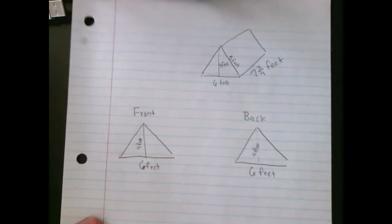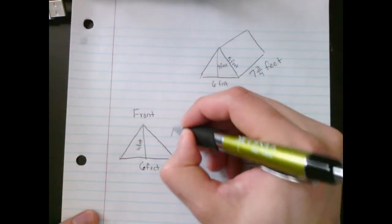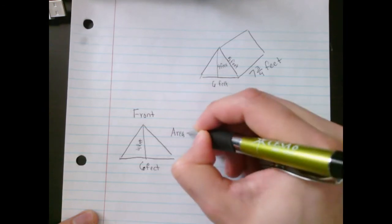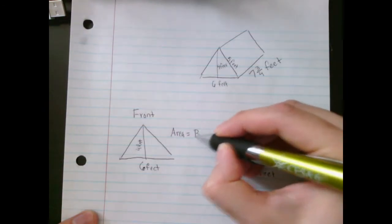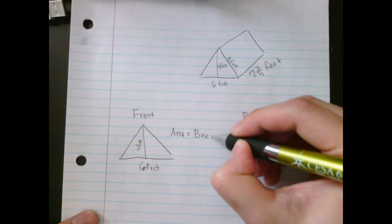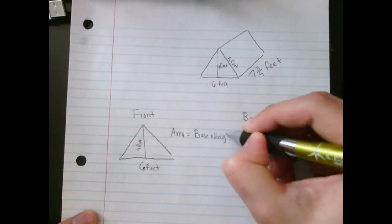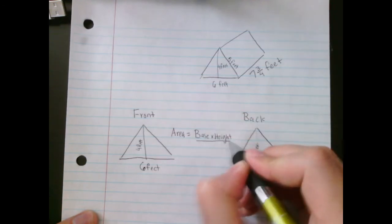So we have to find the areas of this. And if you remember, the area of a triangle is base times height and then divide it by 2.